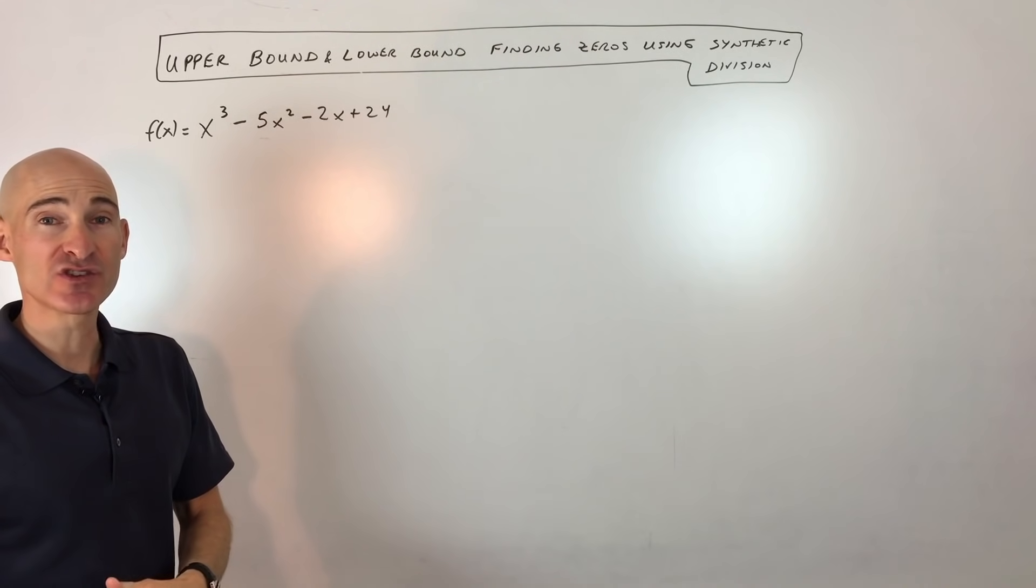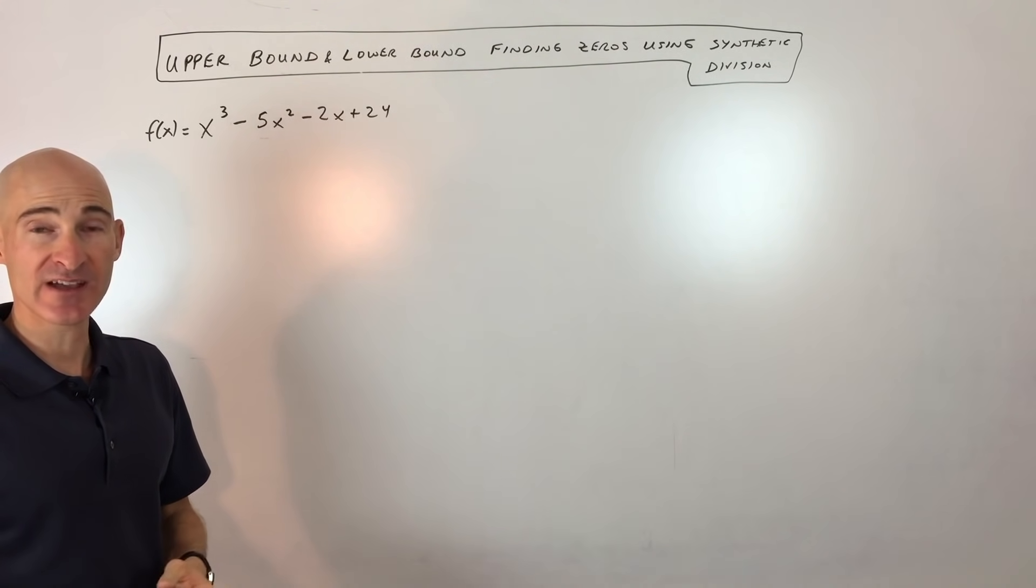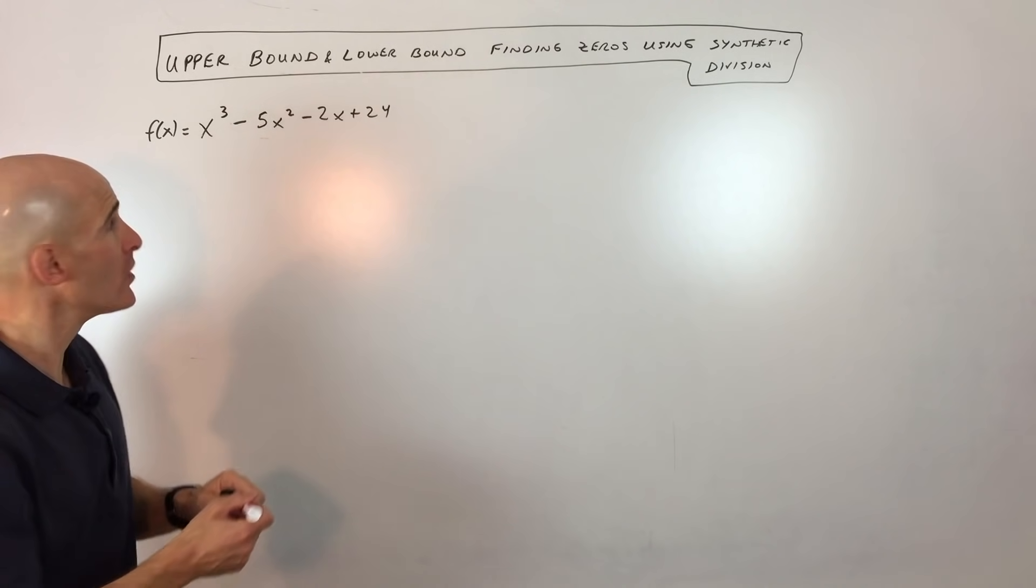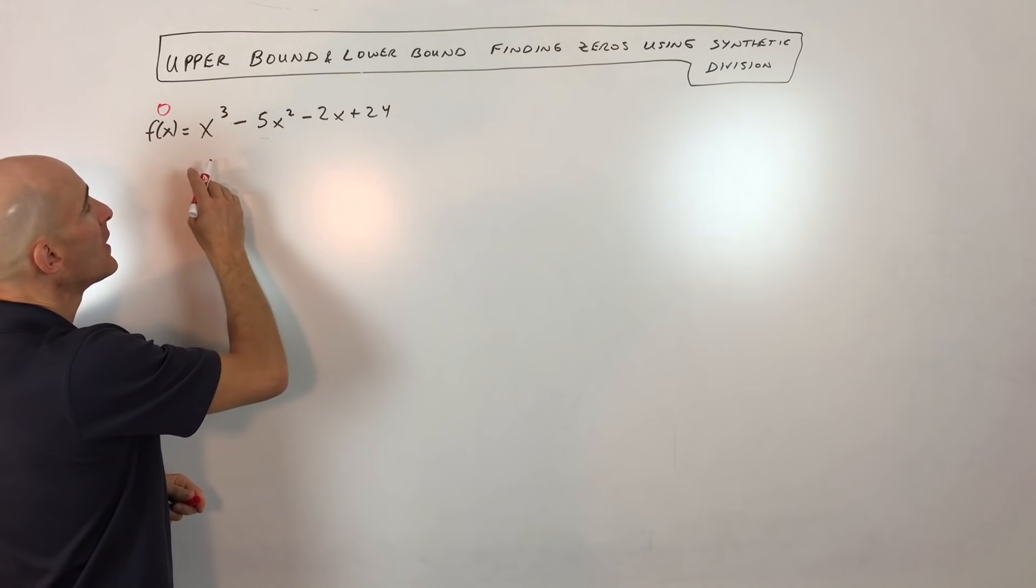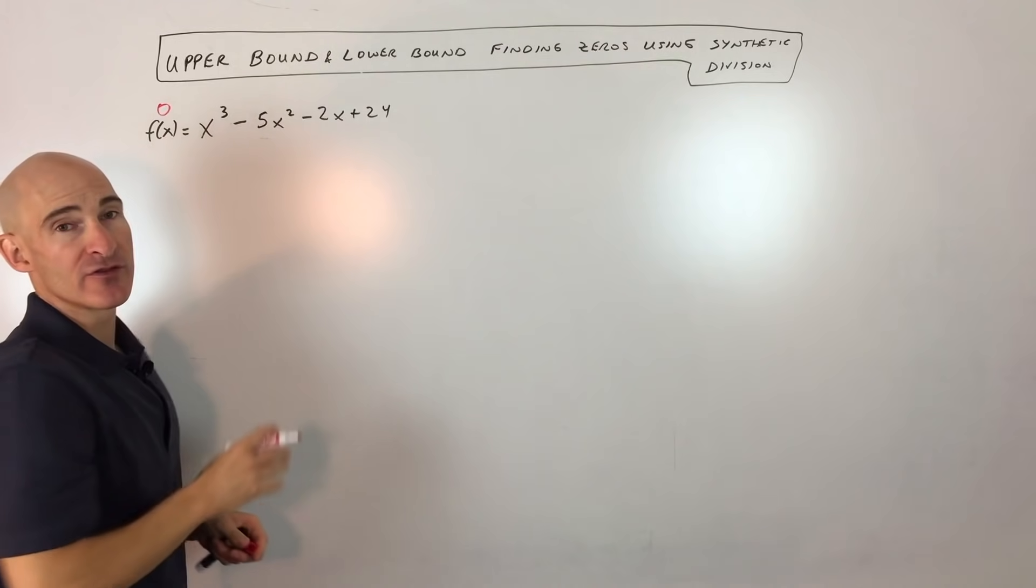Now when you're finding the zeros, these are the x-intercepts. This is where the graph crosses the x-axis. It's where the y-coordinate is zero. So by setting f(x) here equal to zero, we can go ahead and solve for these zeros.